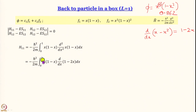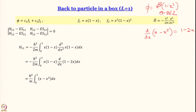We are left with h-bar squared over m multiplied by the integral from 0 to 1 of (x minus x²). Evaluating this integral gives H_11 equal to h-bar squared over 6m.